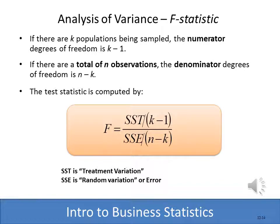Here is the formula for computing the F statistic when working with three or more populations. The F statistic equals the sum of squared differences for treatment (SST) divided by k minus 1, divided by SSE (sum of squared differences attributed to error) divided by n minus k. Don't get too hung up on this because Excel will handle it easily — we'll step through the manual method, but also show you how to do it in Excel.